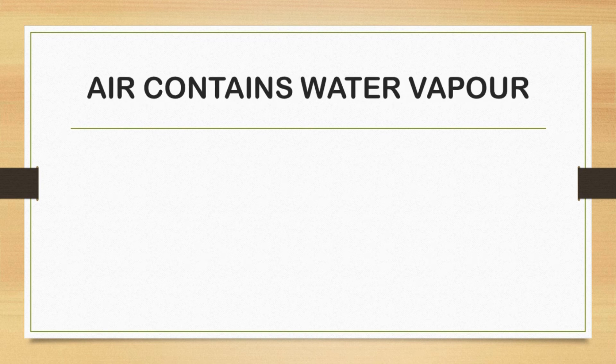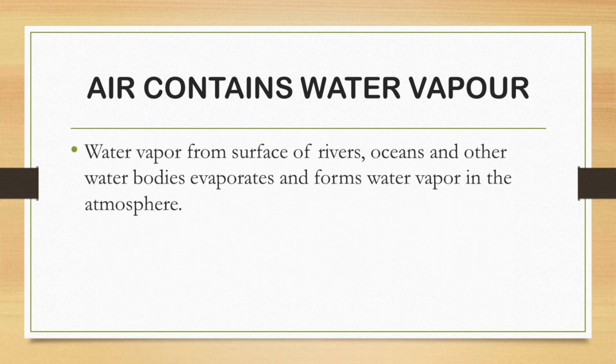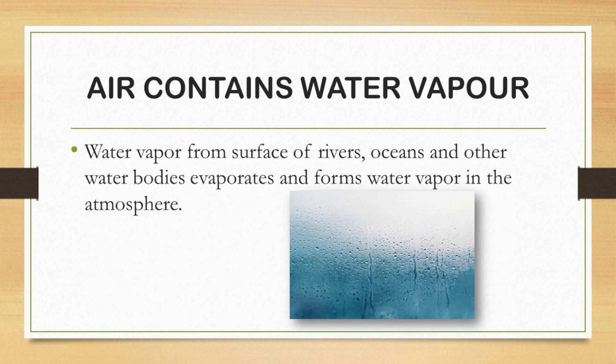Air contains water vapor. You already mentioned that air contains water vapor. Where does this water vapor come from? Water vapor from the surface of rivers, oceans, and other water bodies evaporates and forms water vapor in the atmosphere.